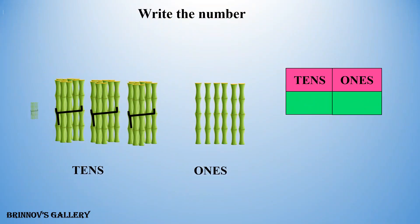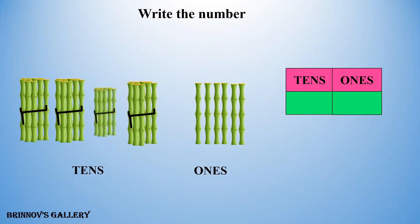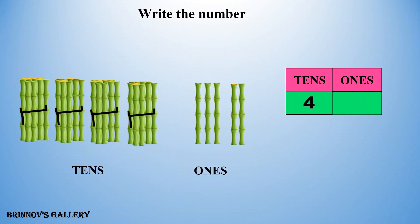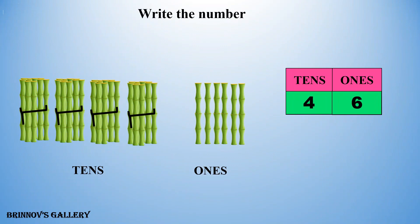1, 2, 3, 4 — 4 tens. 1, 2, 3, 4, 5, 6 — 6 ones. The number is 46.